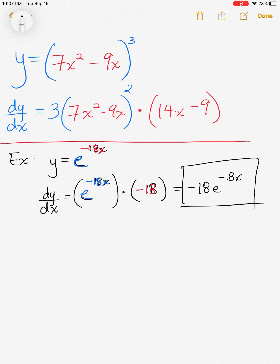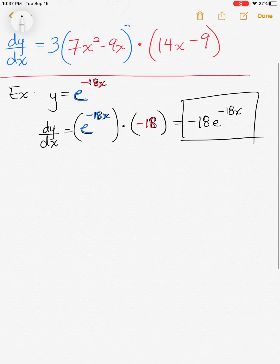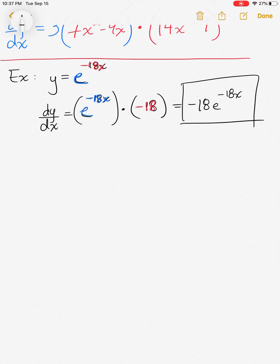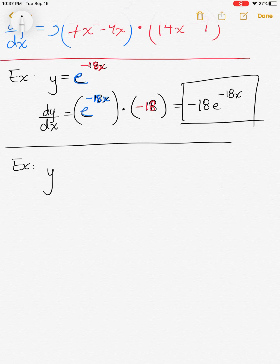Personally, I like explaining the chain rule before going into trig derivatives, because you can have all kinds of embeddings inside trig functions. So I'm just going to toss in an example including a trig function so that you can see how it works.